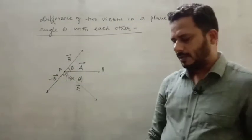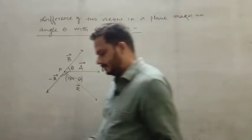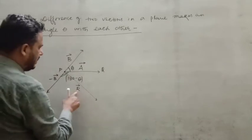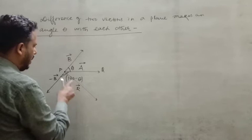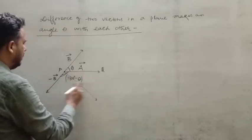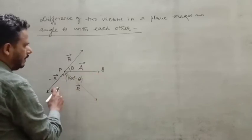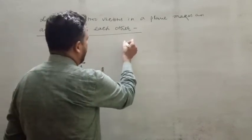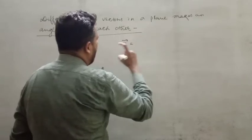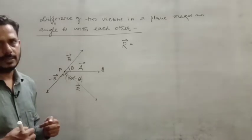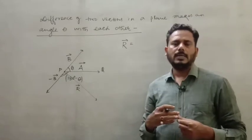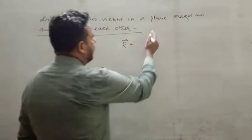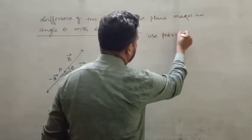So this one is the resultant vector r, and the angle between vector a and vector b is 180 degrees minus theta. We use the previous relation — the same one we calculated for the sum of two vectors in a plane.